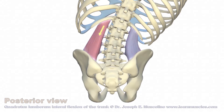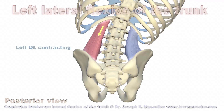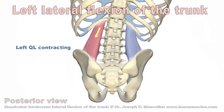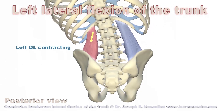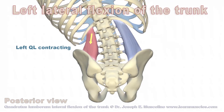Now we see the line of pull of the left QL upon the trunk. When the left QL contracts, it creates left lateral flexion of the trunk.